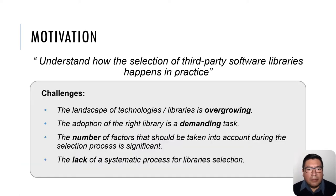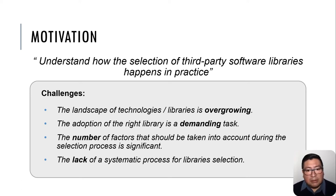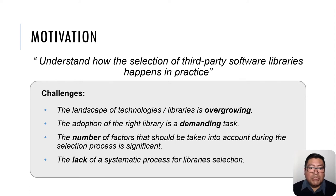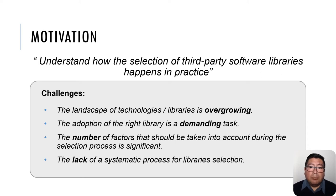What are these problems? In our study, we have identified the following challenges. First, the landscape of technologies is continuously overgrowing, making the selection of libraries even more complex. Second, the adoption of the right library is a demanding task that can happen at any part of the lifespan of a software project. Third, the number of factors that should be taken into account during the selection process is significant, and we are not always aware of which factors or criteria should be more important than others. And lastly, there is a lack of a systematic process for library selection. We want to know what kind of guidelines or heuristics practitioners follow to understand how this selection of third-party software libraries happens in practice.